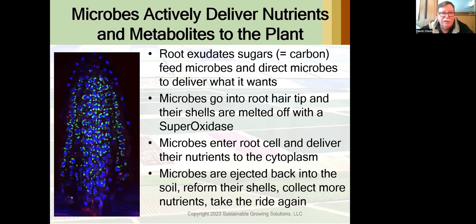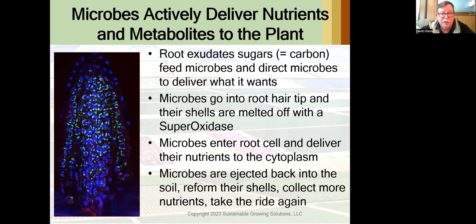Here's a quick illustration of how microbes deliver nutrients to the plant. What you're looking at on the left is the tip of a root hair. The blue are the cells of the root, and the green are microbes — there are more microbes than there are plant cells. The plant puts out root exudates in the form of sugars, which are carbon. That's the core of the carbon cycle in the soil, and carbon sequestration happens through that mechanism. As the plant feeds the microbes, it also puts signalers into that, which direct the microbes to deliver what it wants.